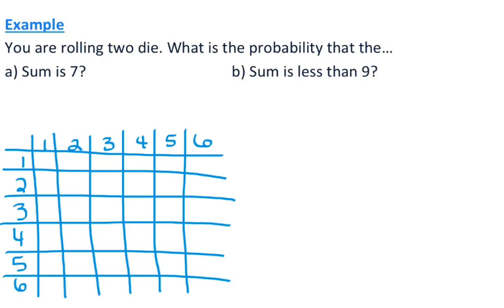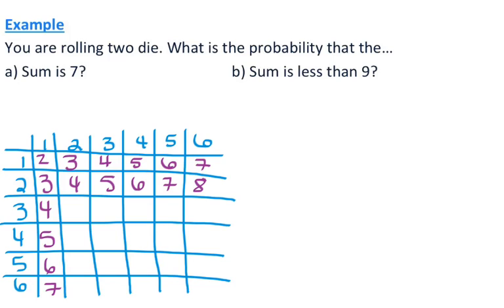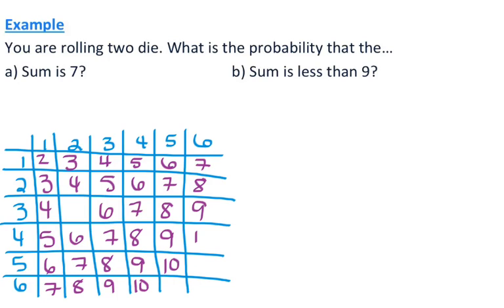For example, when I roll a 1 and a 1, it gives me a 2. A 1 and a 2 gives me a 3, and so forth. I'm going to go ahead and fill in the table. I forgot that one box — 2 plus 3 is 5. Those are all the different sums I can get when I roll the dice.